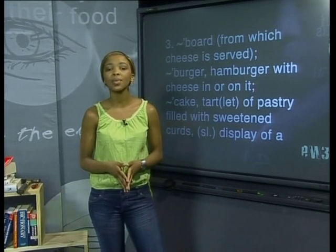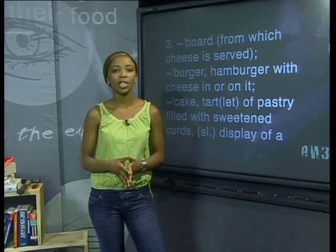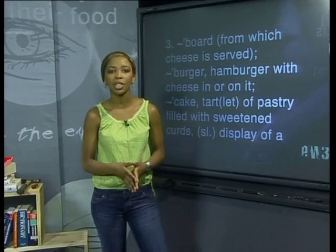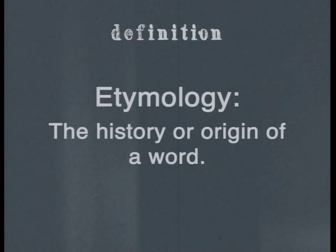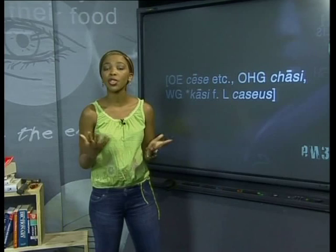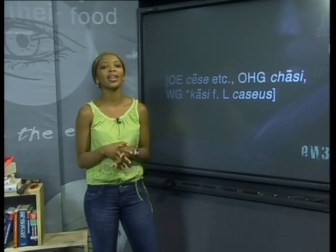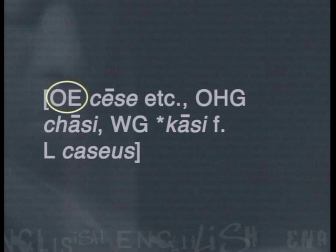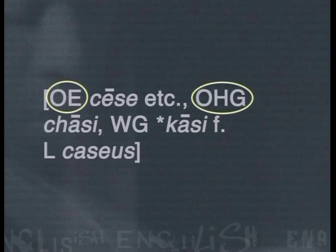There is still something else that the definition of cheese tells us. In square brackets at the end of the definition, it gives us its etymology. Etymology is the history or origin of a word. The OE tells us that cheese comes from Old English, and that people who spoke Old English got the word from people who spoke Old High German. These abbreviations will all be in the front of a dictionary.